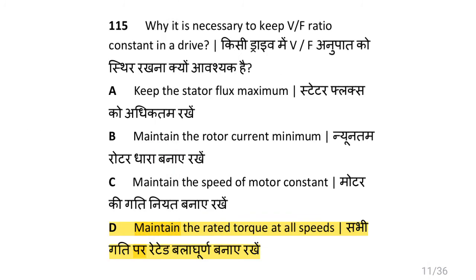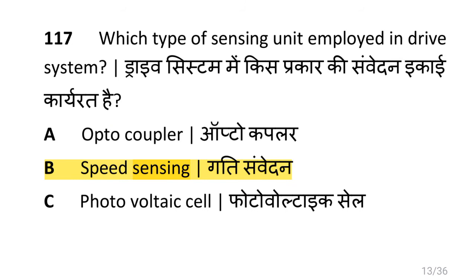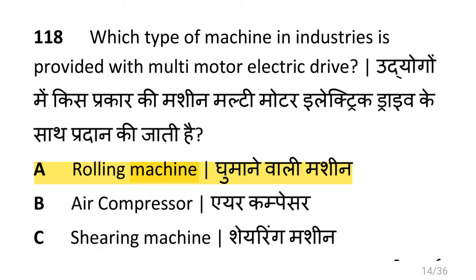Why is it necessary to keep V by F ratio constant in a drive? That is to maintain the rated torque at all speeds. Which power modulator is used in electric drive systems? That is cyclo-converter. Which type of sensing unit is employed in drive systems? That is speed sensing.